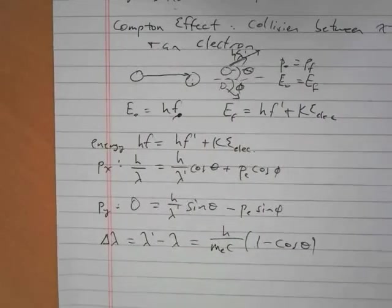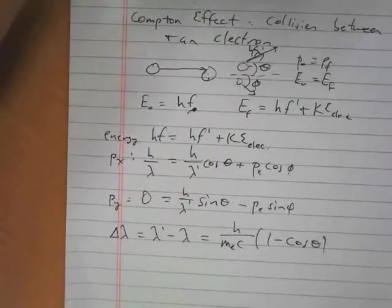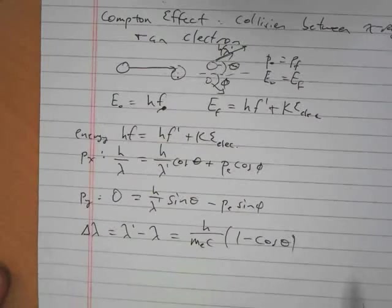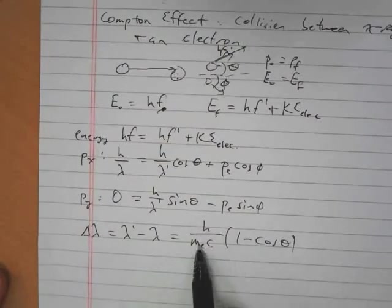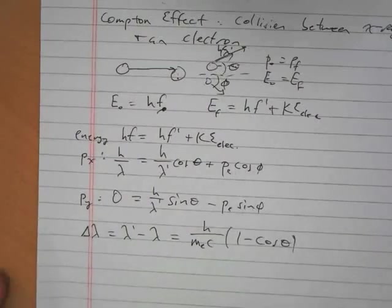And as it turns out, that is the greatest change in wavelength that can occur when a photon collides with an electron. If you were colliding with a proton instead, you could just throw in mass of the proton, and it works just as well, or neutron, or whatever. And these equations work just as well for other particles as well.